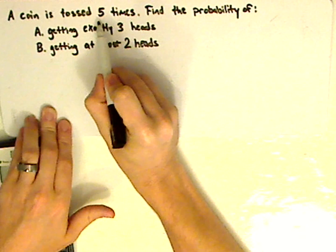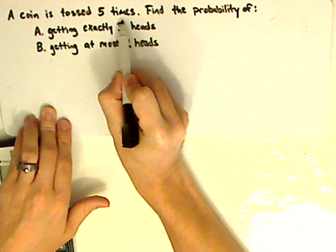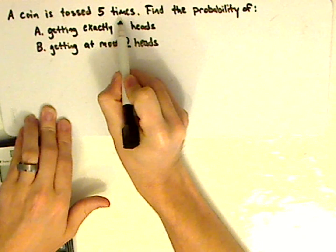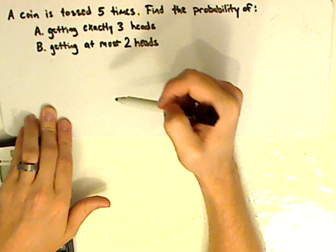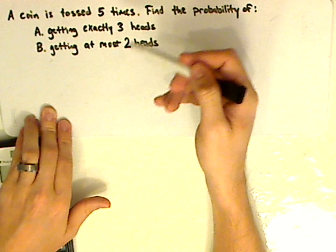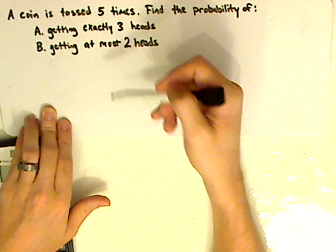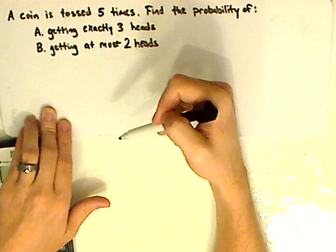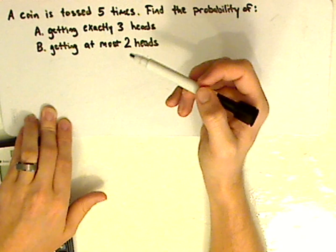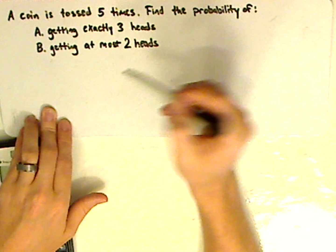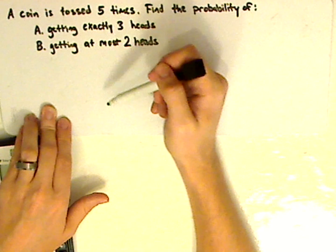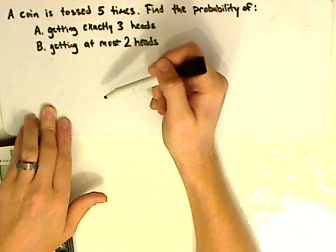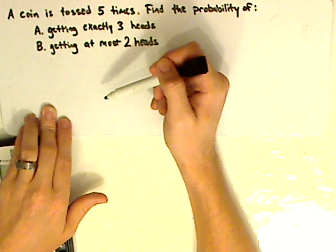Notice that also the trials are fixed. You have five trials. Now also notice with a coin that the probability of success, one out of two, is always the same. And notice also that each trial does not affect the other. Well what does that all mean? That means it's a binomial experiment.